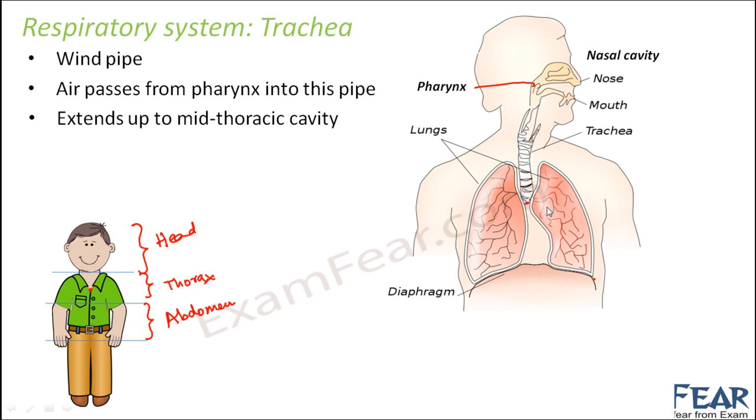After the mid thoracic cavity, the trachea enters inside the lungs where it gets divided into bronchi and bronchioles. We will talk about that very soon.